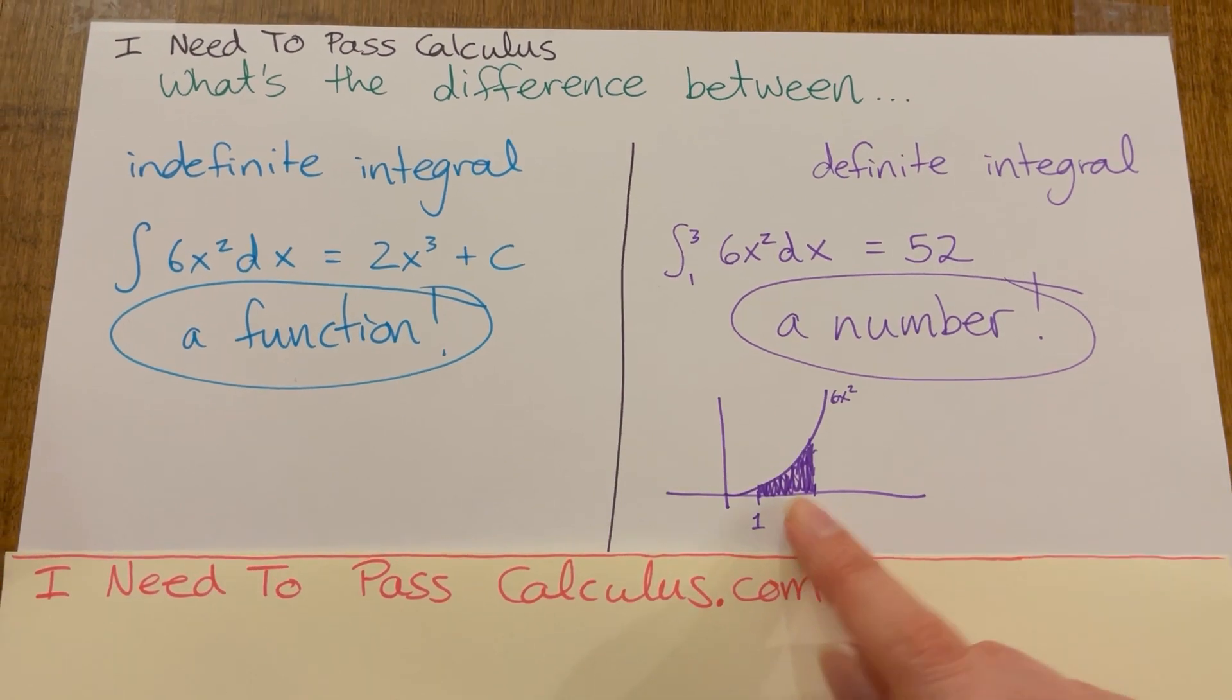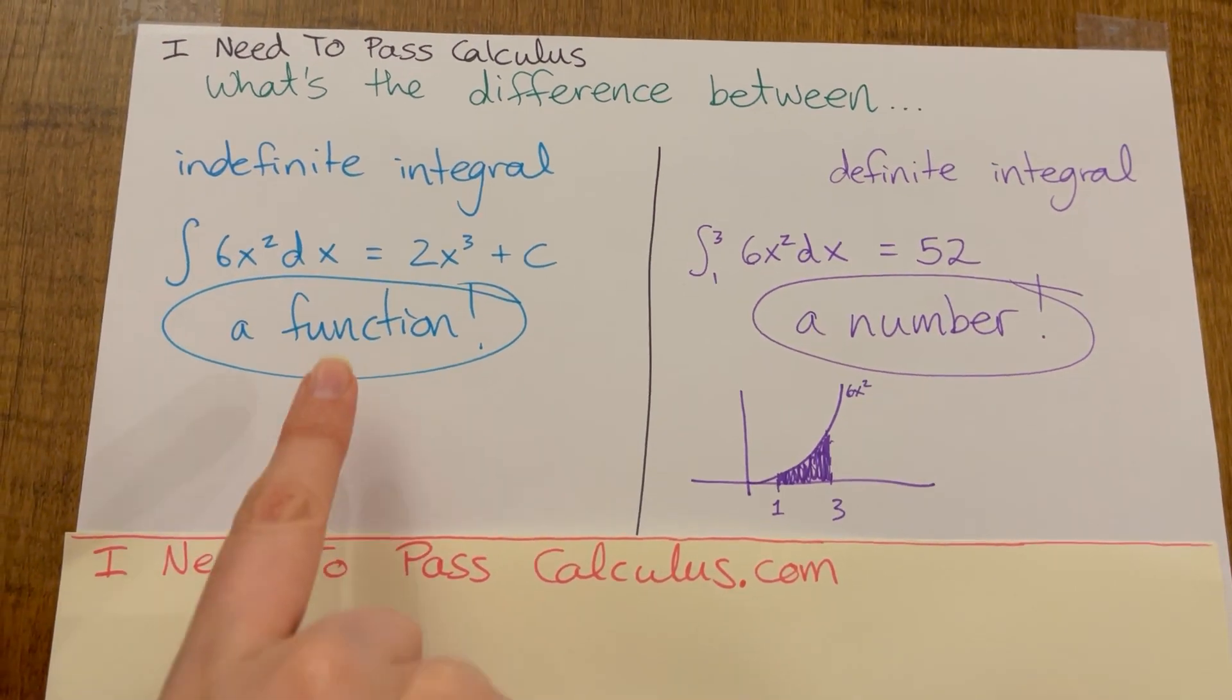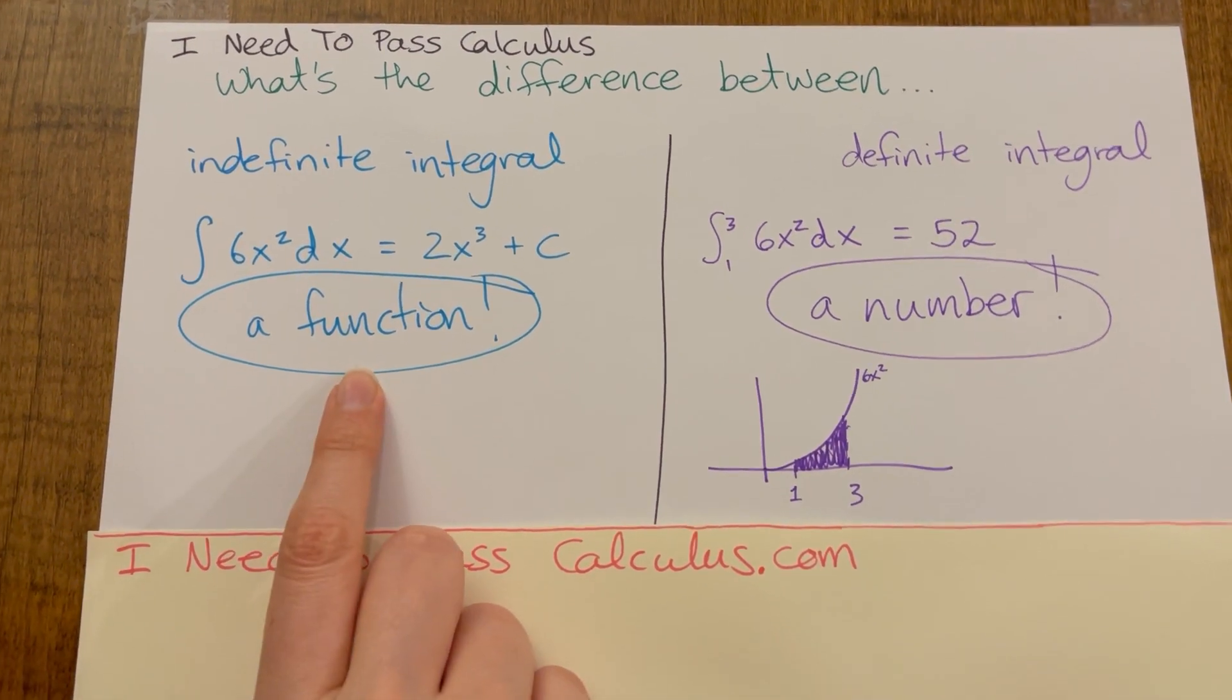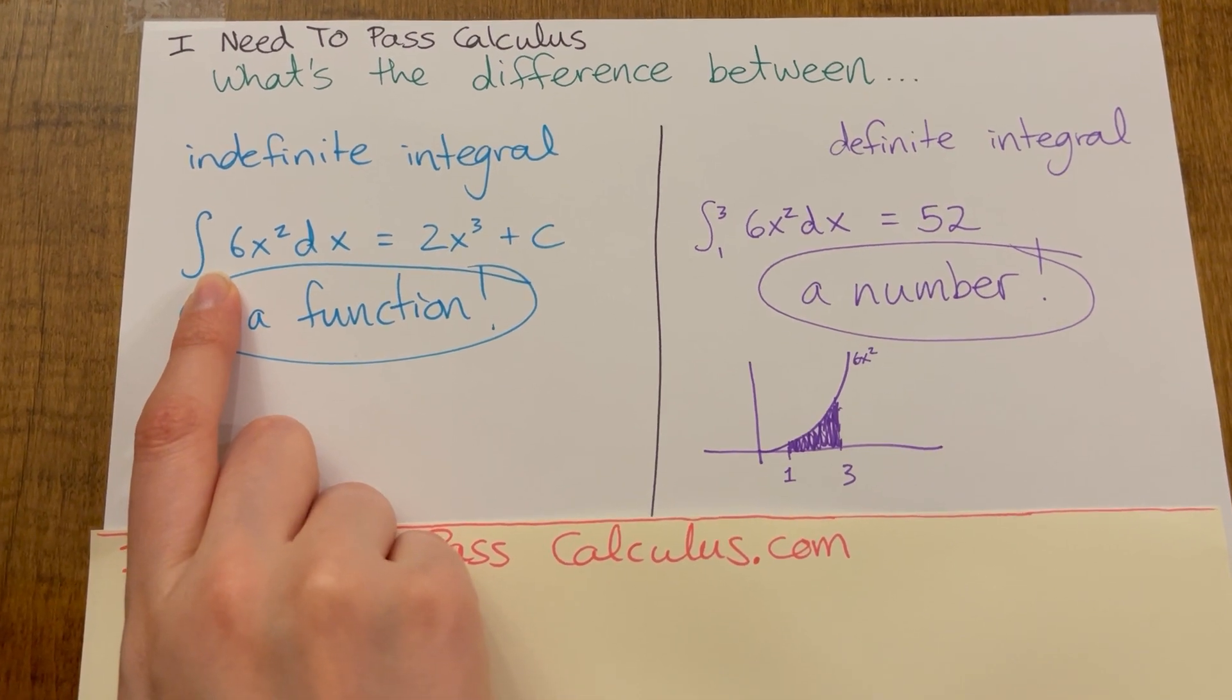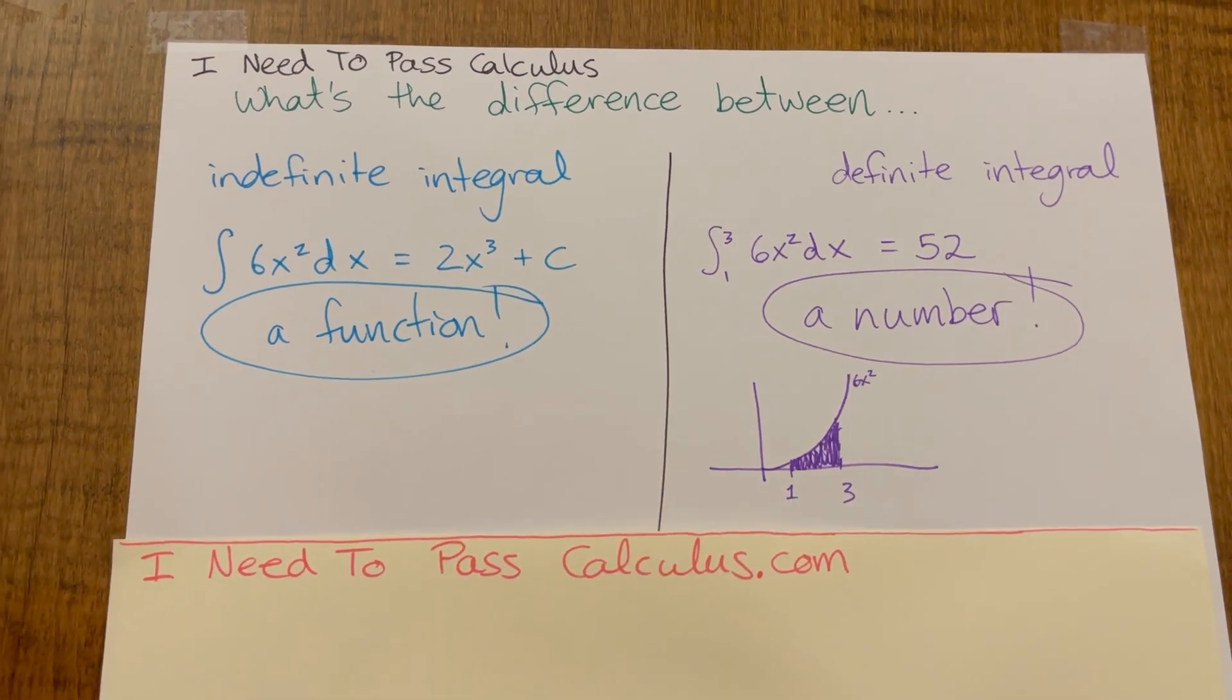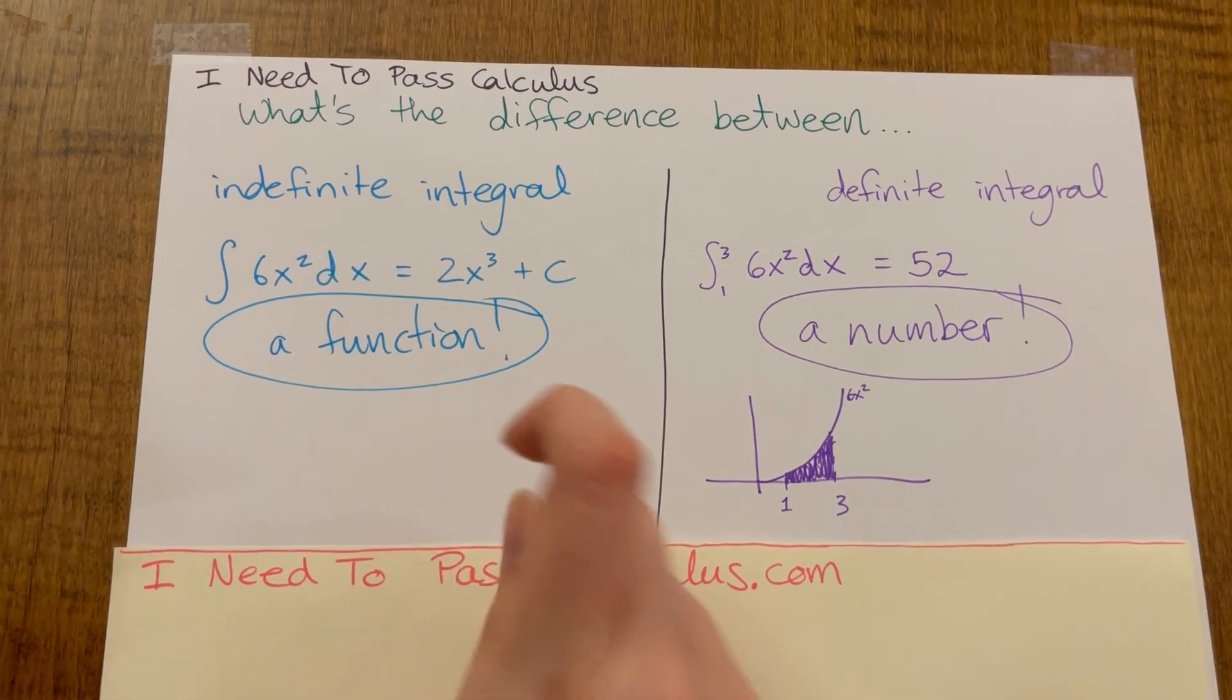And so this sort of curvy trapezoid thing, this area is going to be whatever number you get when you calculate this definite integral. Whereas this function, it doesn't give you a very specific numerical area, but that's because you didn't make the problem very specific. You didn't decide where to do the area between, and so the answer stays pretty general. As soon as you decide where you're going to do the area between, this eventually can turn into a number using the fundamental theorem of calculus.